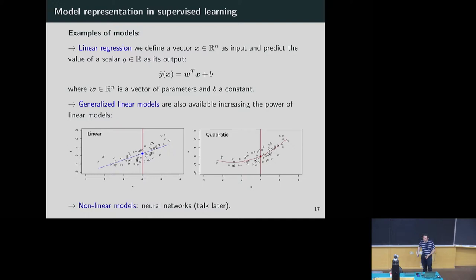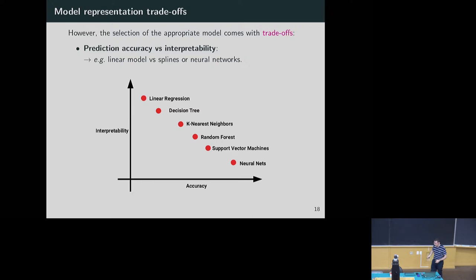If the data is distributed in a nonlinear way, you can do a linear fit, or a generalized linear model with polynomial fit. But we are bounded by this family of linear models. One solution is to try nonlinear models like neural networks. The problem is that by increasing the flexibility of our model, we lose interpretability. If you take a linear regression, the accuracy is low but interpretability is high. As soon as you go to neural networks, you increase accuracy a lot but lose interpretability. This is one of the trade-offs of machine learning.